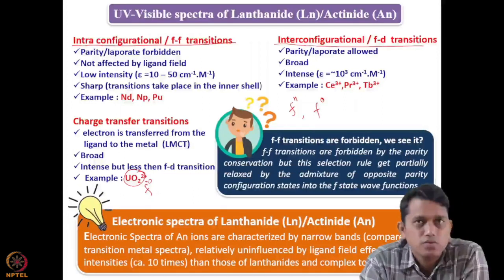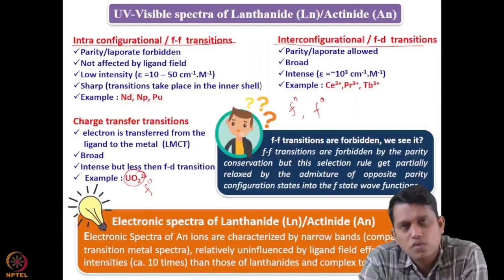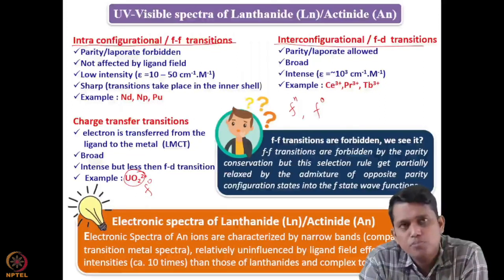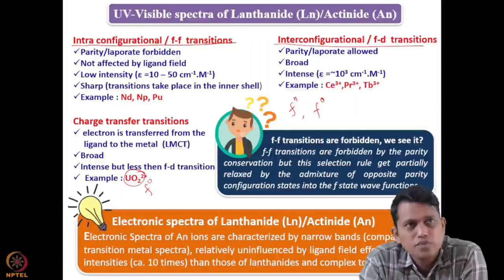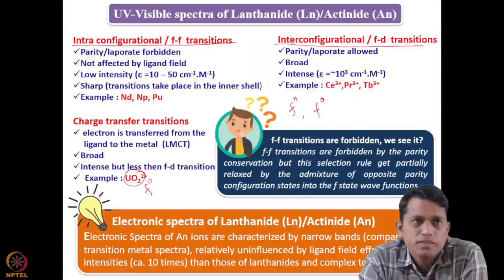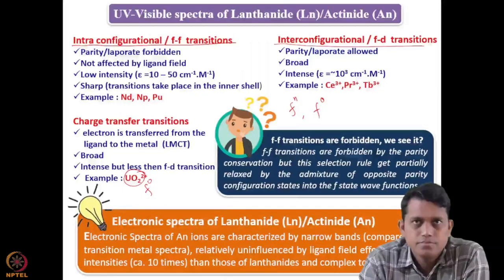If you compare the electronic spectra of lanthanides and actinides, the lanthanides have sharper spectra but with lower epsilon values, whereas actinides have broader spectra. Because of the more diffuse nature of the 5f orbitals compared to the 4f orbitals, actinides have more intensity and are more participative in reactions compared to lanthanides.